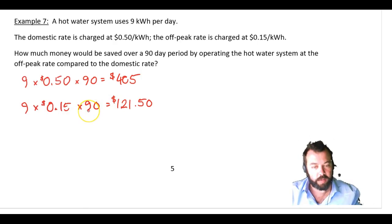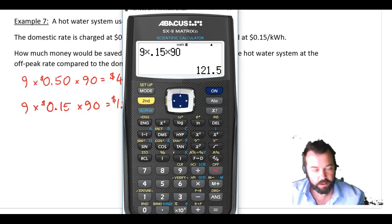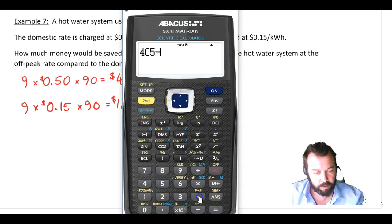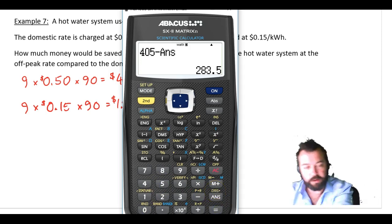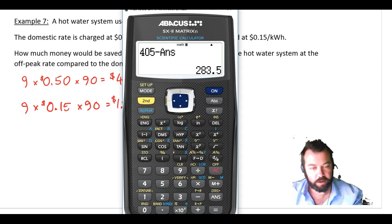Now the question is how much will we save? Let's come back to the calculator. Okay, and another bit of a time saver. We're going to say $405 minus my previous answer like that, equals. So we save $283.50 over that 90 day period.